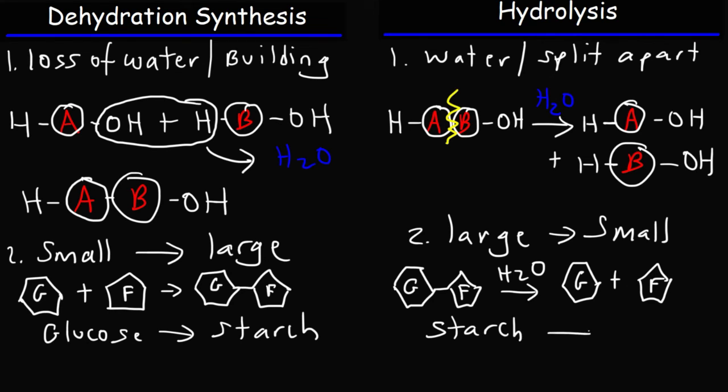Now when you take starch, add water, and break it down to glucose, that will be hydrolysis. Now keep in mind, when synthesizing starch from glucose, water will be a byproduct, as in the case of all dehydration synthesis reactions.